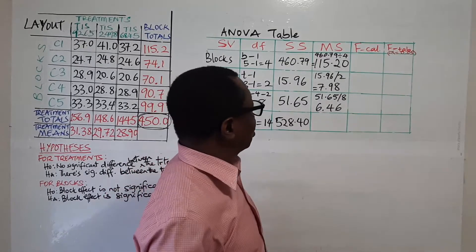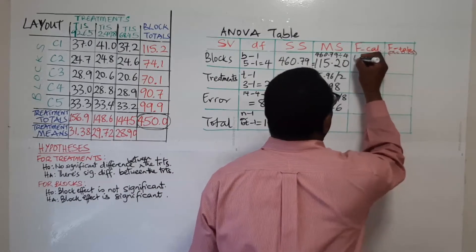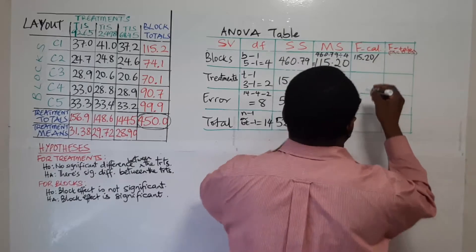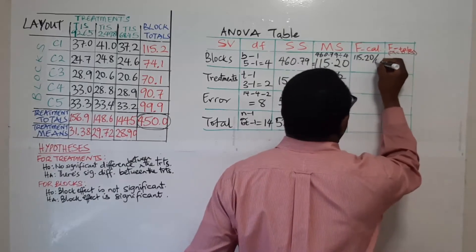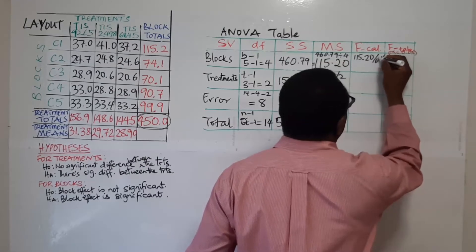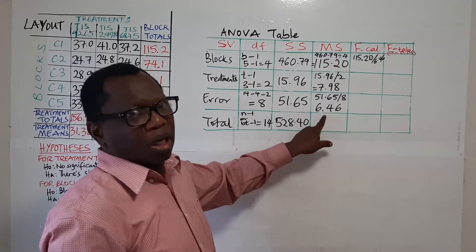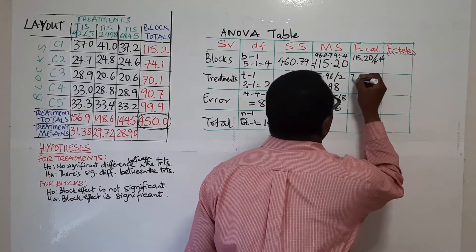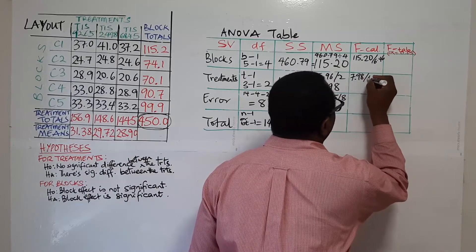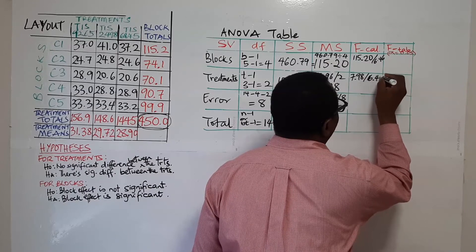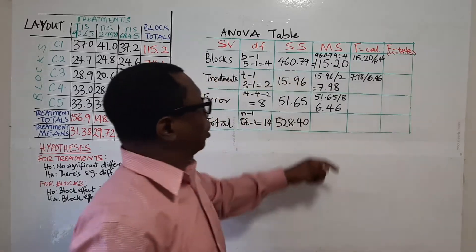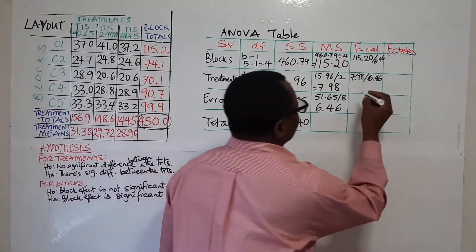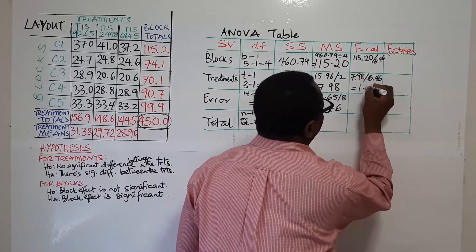So let's go now. So what I mean is this one will be 115.20 divided by 6.46. That's the error MS. Similarly, here you will say 7.98 divided by 6.46. So that's the way you will evaluate those. And you will get 1.24.